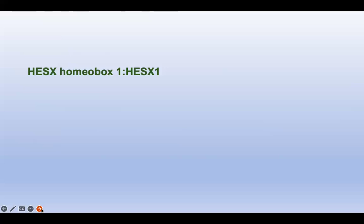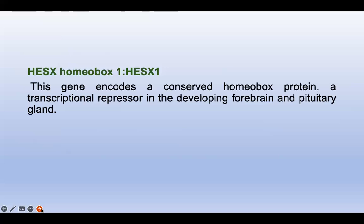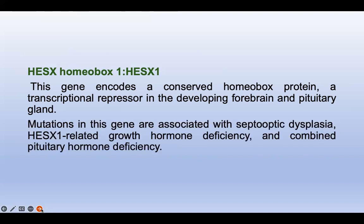Next is HESX homeobox 1, also called HESX1. This gene encodes a conserved homeobox protein — a transcriptional repressor in the developing forebrain and pituitary gland. HESX1 plays a role in forebrain and pituitary gland development. Mutations in this gene can cause septo-optic dysplasia, HESX1-related growth hormone deficiency, and combined pituitary hormone deficiency.